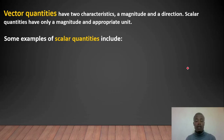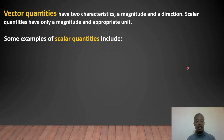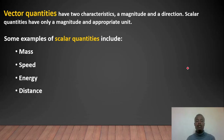The scalar quantity involves only magnitude. Velocity is a vector. The unit is, for example, meters per second. Examples of scalar quantities include mass, speed, energy, distance, temperature, and density.